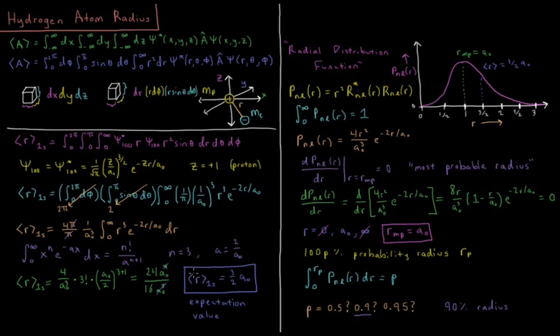So we have that plotted on our graph up here. We have 3 halves times the Bohr radius is our expectation value, or the mean value of the radius. So that's one measure of what the radius of a hydrogen atom is. That's the average or the mean value.